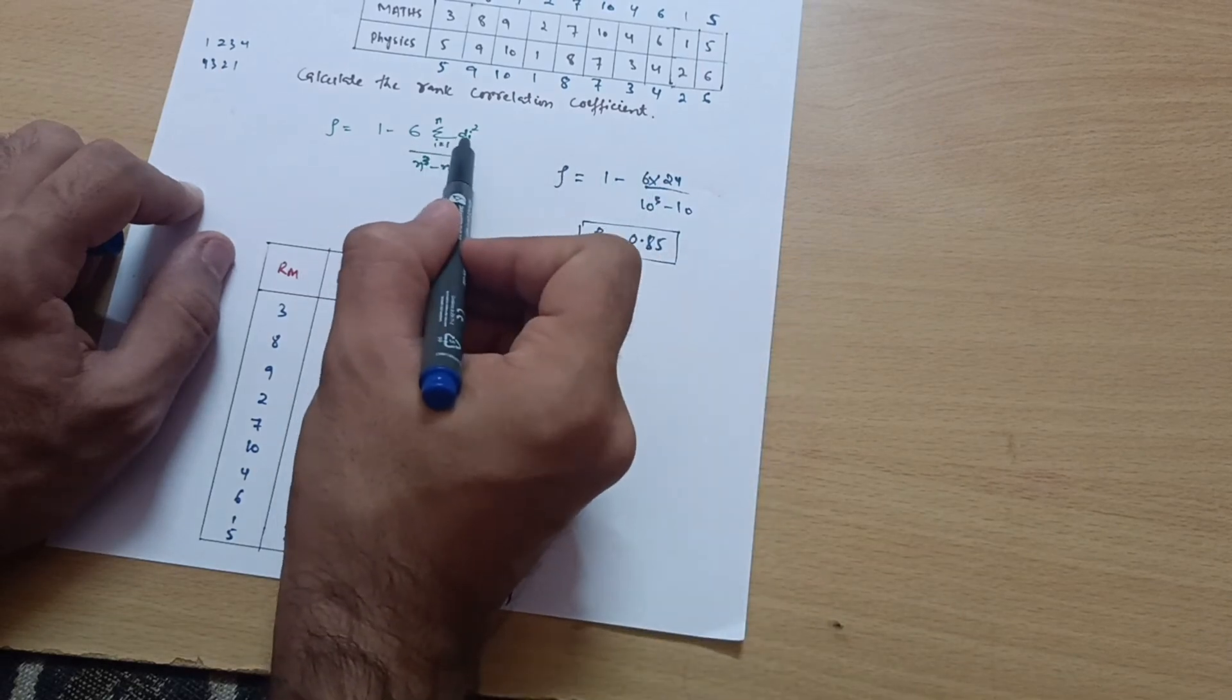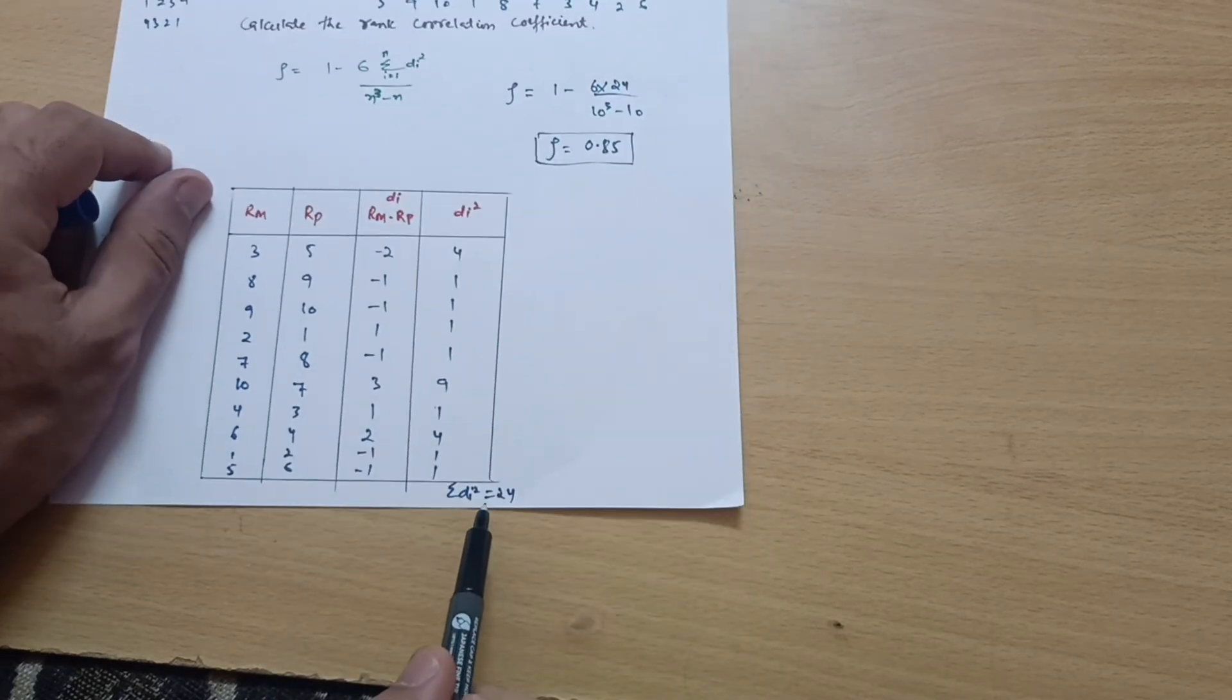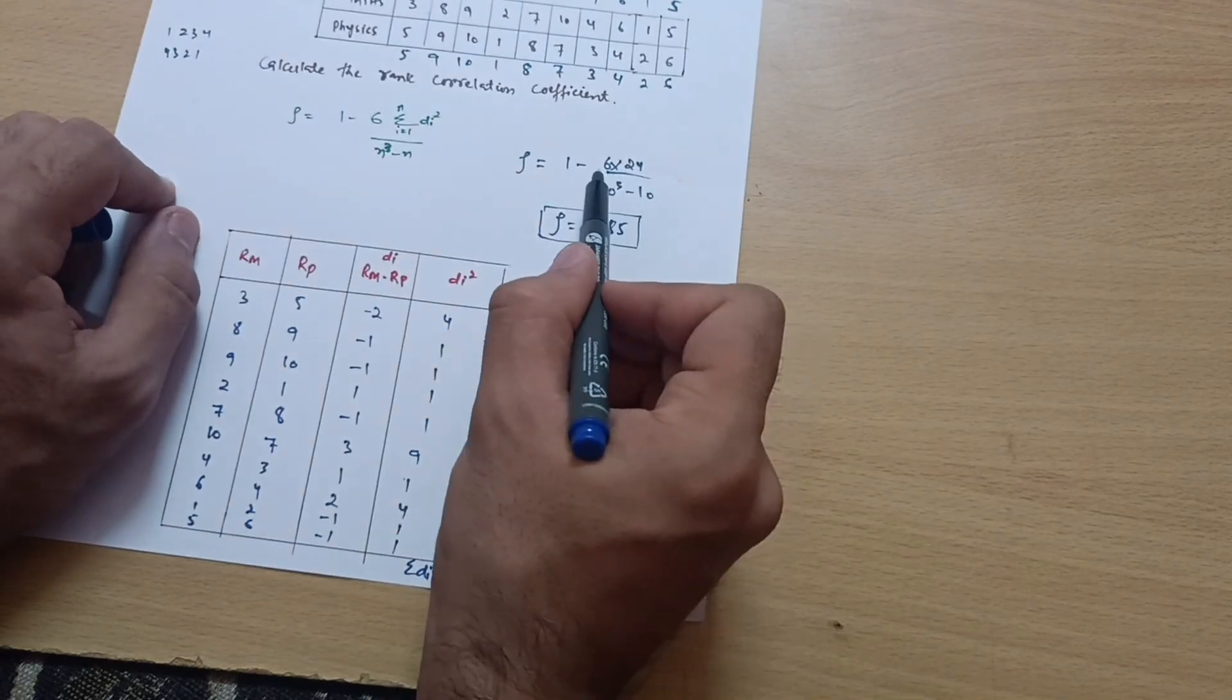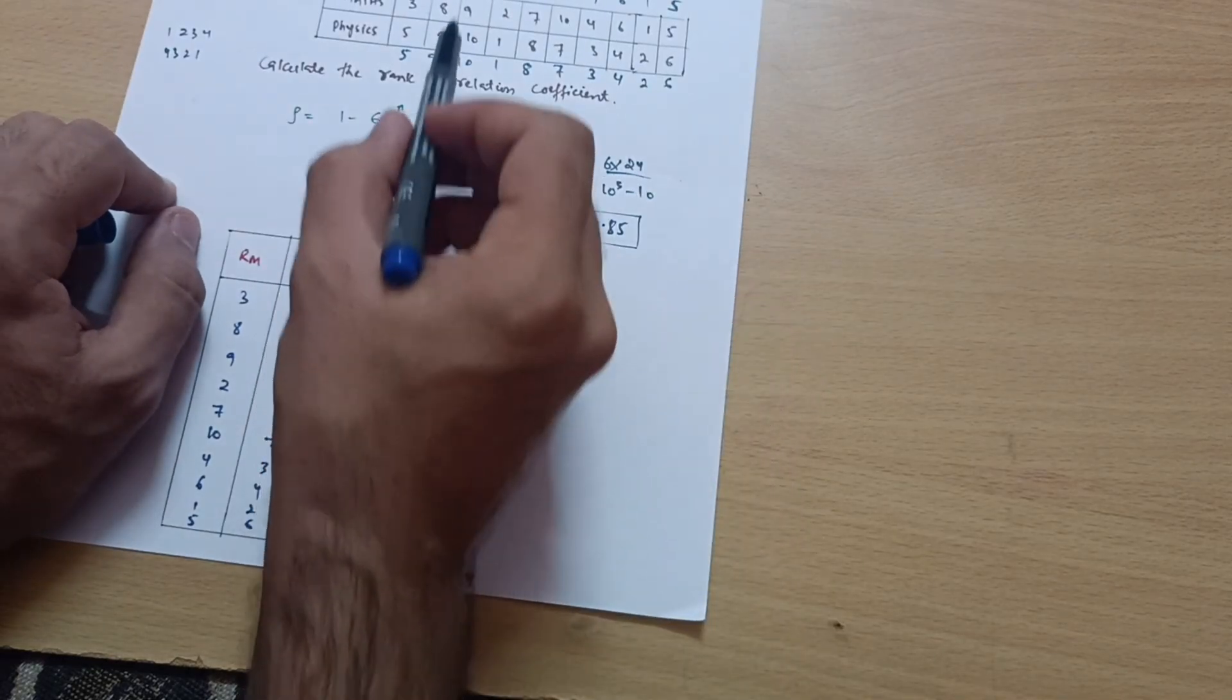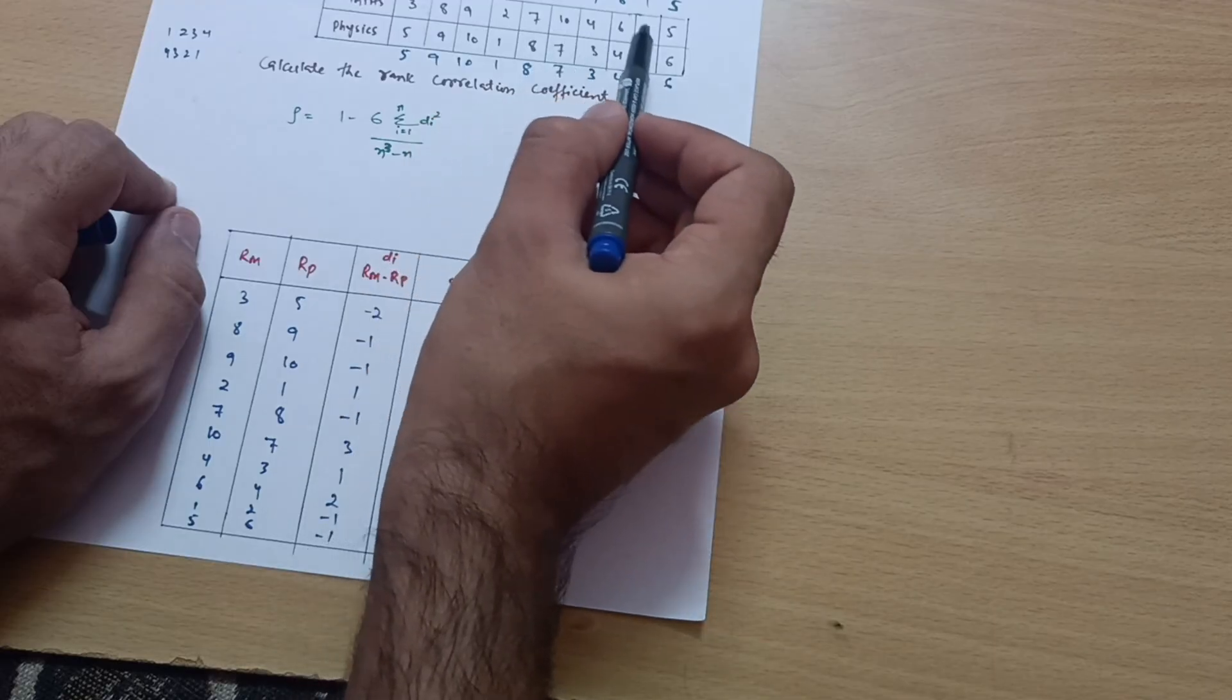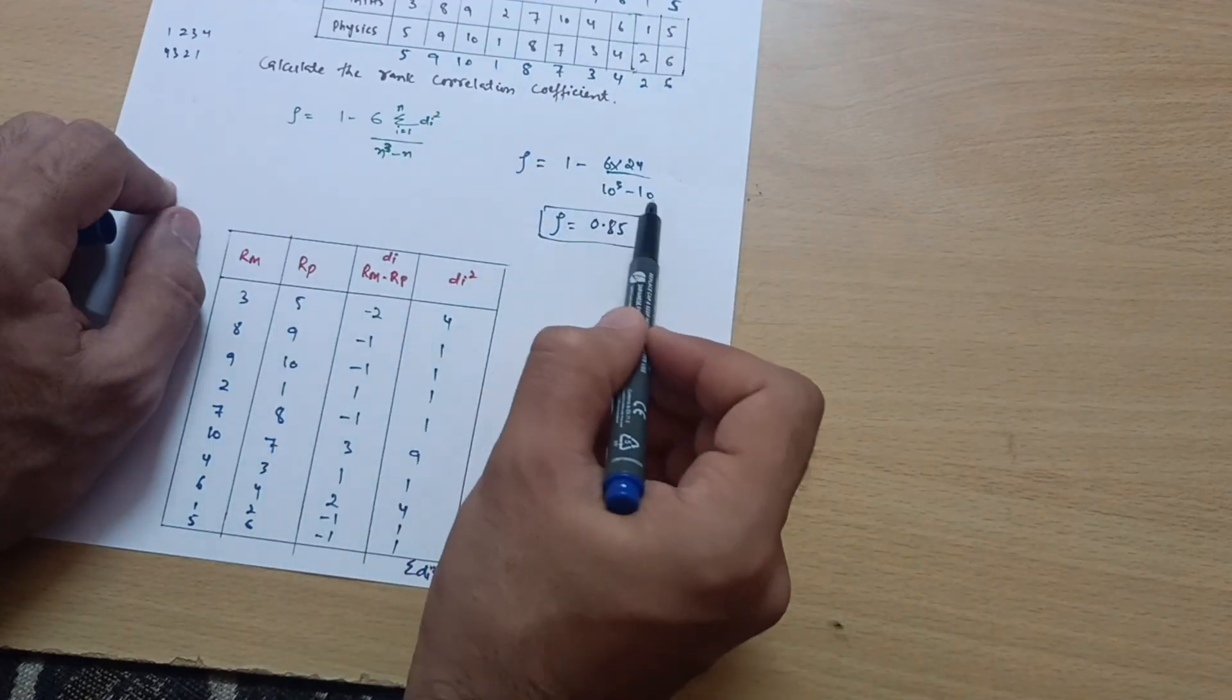We need this formula. Rho is equal to 1 minus 6 times summation of di squared. The summation we are getting is 24, multiplied by 24, divided by n cubed minus n. N is the number of terms: 1, 2, 3, 4, 5, 6, 7, 8, 9, 10. So 10 cubed minus 10.